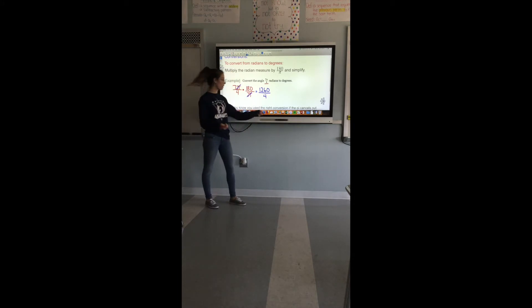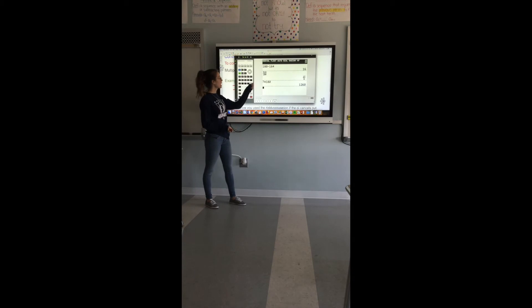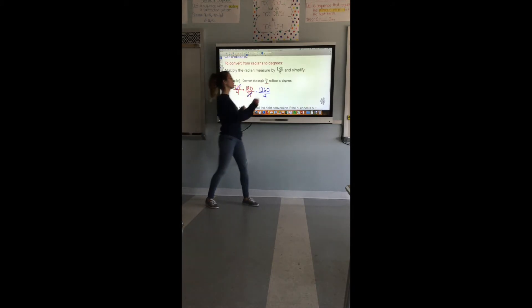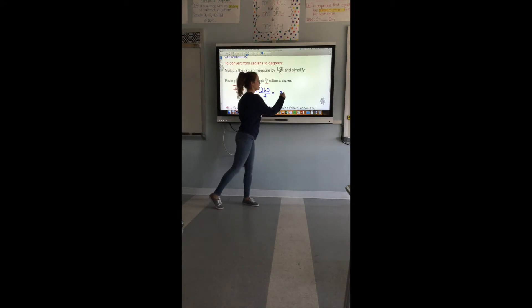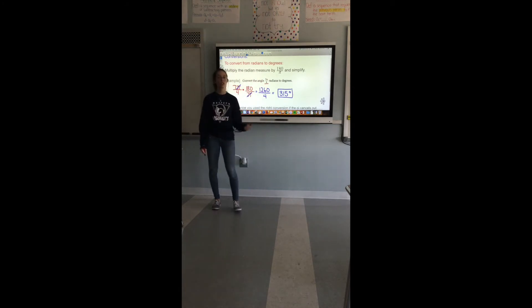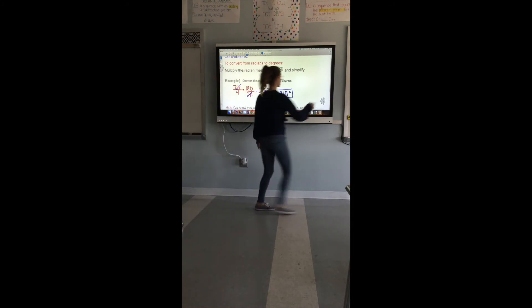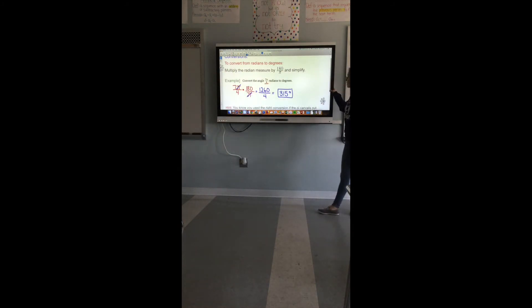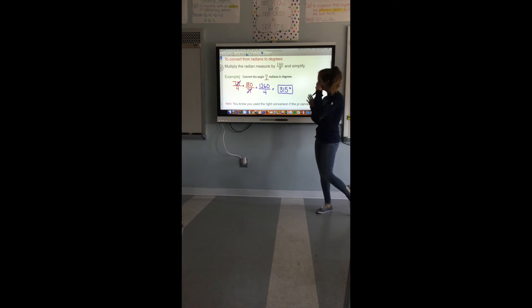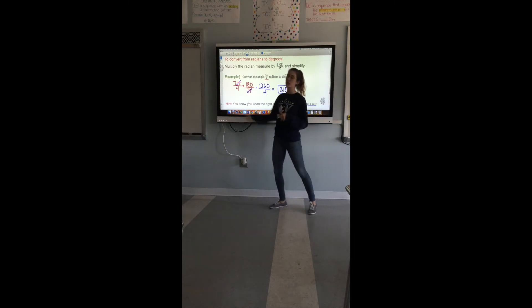Now just divide the numbers so we take 1260 divided by 4 and we get 315. So this is equal to 315 degrees. Notice I included the degree symbol there, you need it because you need that unit in there. And then just a little kind of hint slash note: you know you use the right conversion if the pi cancels out which is what it did in this first step.